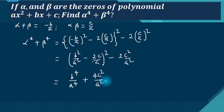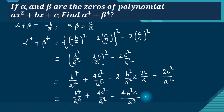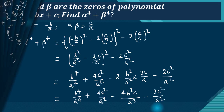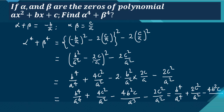Expanding further: 4c squared by a squared minus 2 times b squared upon a squared times 2c upon a, minus 2c squared upon a squared. This gives b to the fourth upon a to the fourth plus 4c squared upon a squared, minus 4b squared c upon a cubed, minus 2c squared by a squared. Simplifying: b to the fourth by a to the fourth minus 4b squared c upon a cubed plus 2c squared by a squared.